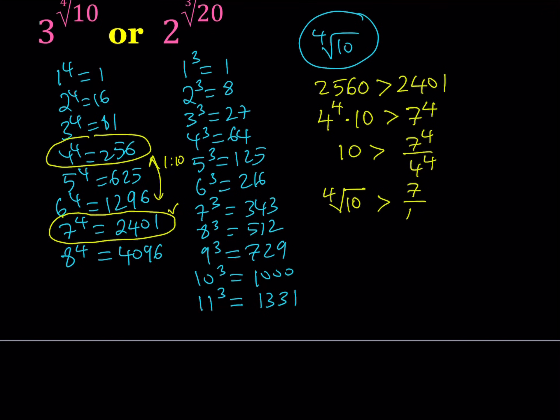From here, we're getting that the 4th root of 10 is greater than 7/4. Yes, it is greater, but it's also somewhat close. 7/4 is 1.75. So, the 4th root of 10 should be greater than that, 1.75 something or maybe 1.76 something. We know that it's greater. So, that's one of the inequalities we're going to use.